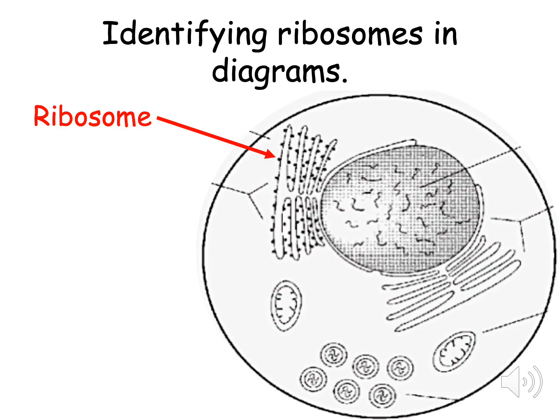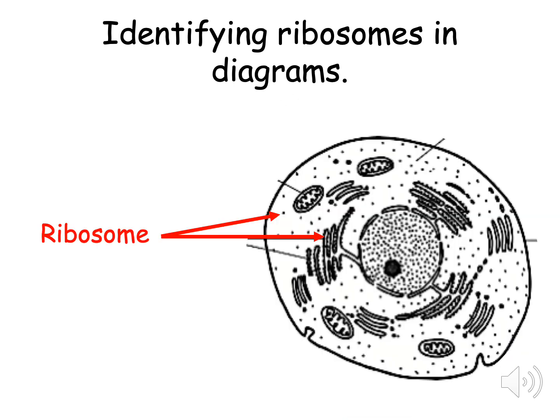This is an example of an animal cell. The small black dots are called the ribosomes and you can see they're just parked on this structure here. Again this is another example of an animal cell. The black dots are both in the cytoplasm and also attached to a structure.